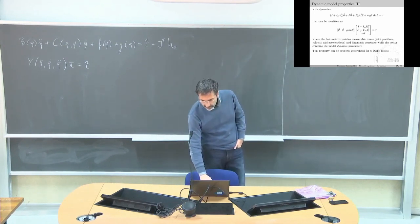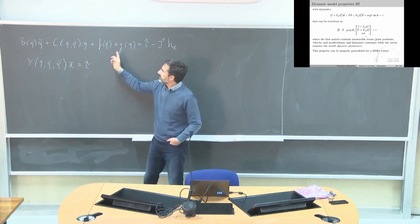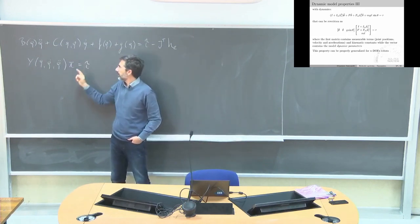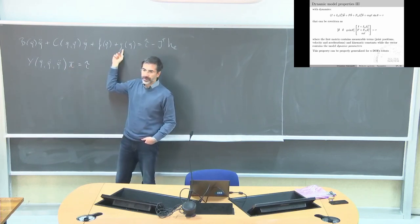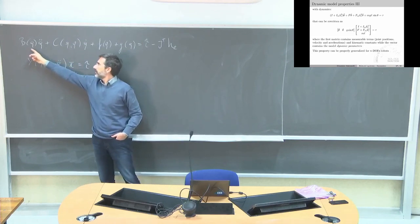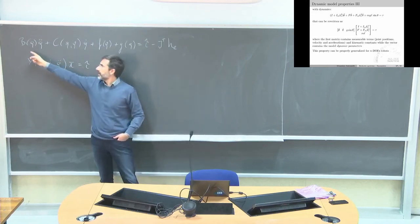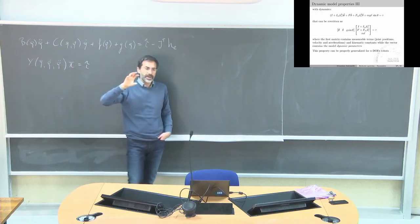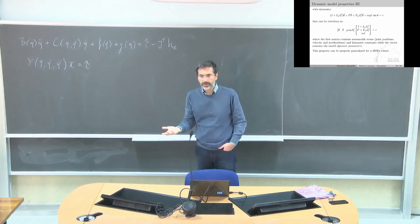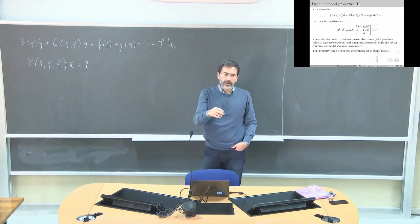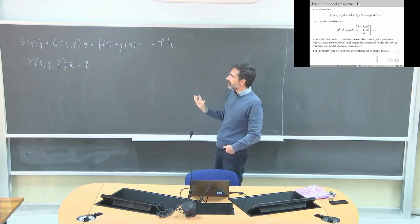Why do we need to know those parameters exactly? Because they appear in the gravity term, in the mass matrix, and also in the Coriolis terms. Friction of course only here. The better I know the model, the more advanced control law I can implement, or the more accurate analysis I can do of the movement of the robot. It's a matter of knowing my model.